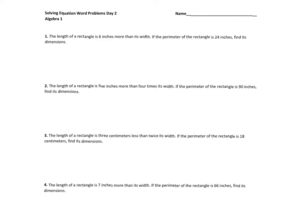Today is our second day of word problems, and you're going to notice that all of these word problems deal with shapes. Our first example says the length of a rectangle is six inches more than its width. If the perimeter of the rectangle is 24 inches, find its dimensions — meaning what is the length and the width.